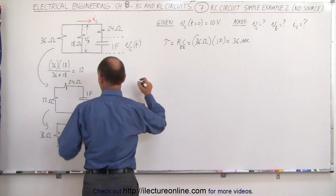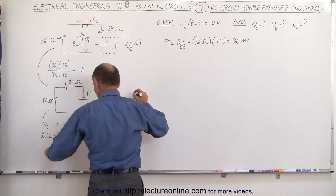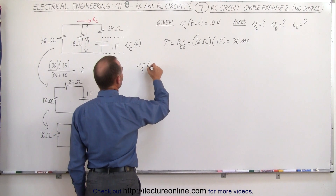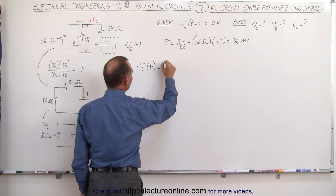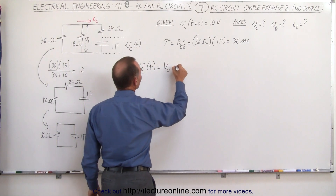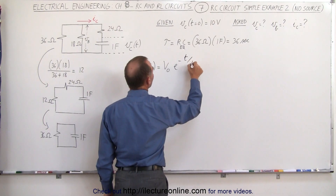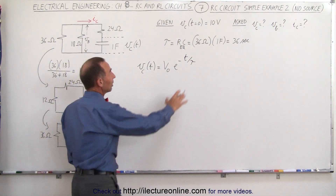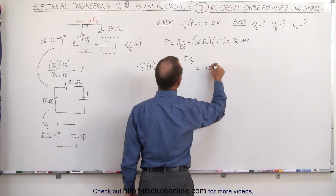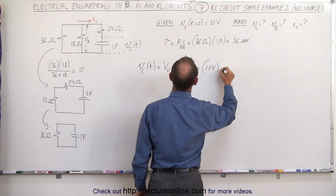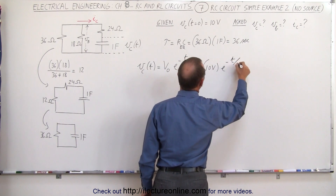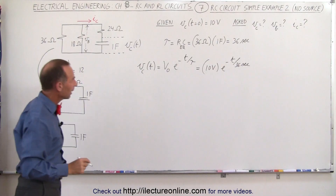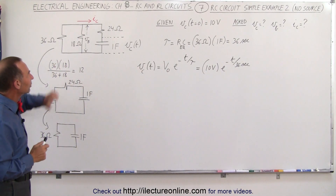The voltage across the capacitor on this equivalent circuit is given by V_C as a function of time equals the initial voltage times e to the minus t over tau. Since we know the initial voltage is 10 volts and tau is 36 seconds, this becomes 10 volts times e to the minus t over 36 seconds.